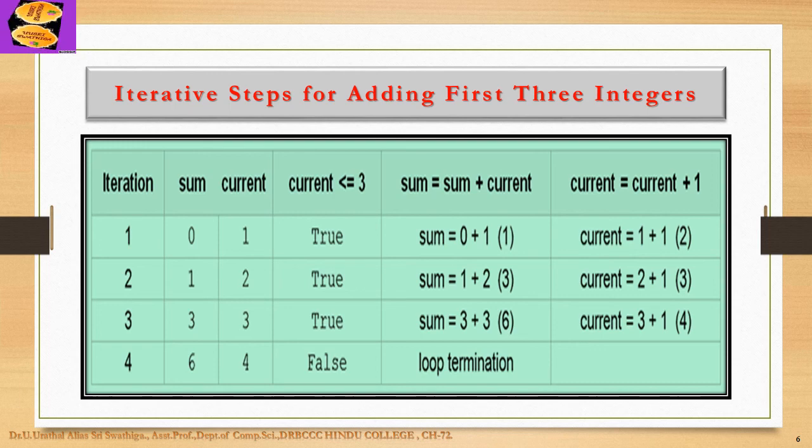Suppose for the example in the figure that the user enters the value 3. Since variable current is initialized to 1, the first time the while statement is reached, current is less than or equal to 3 is true. Thus the statements within the loop are executed and sum is updated to sum plus current. Since sum is initialized to 0, sum becomes 1. Similarly, current is updated and assigned to 2.